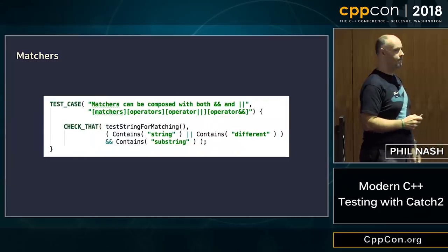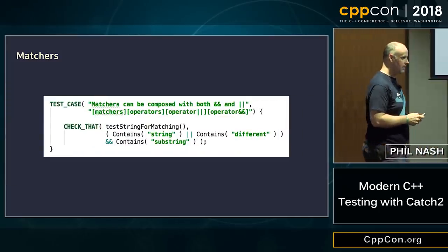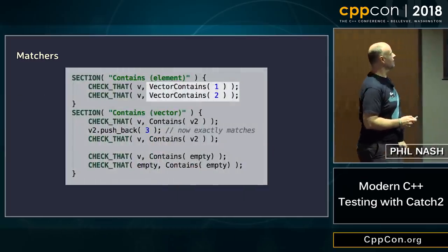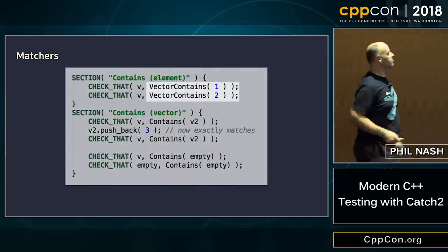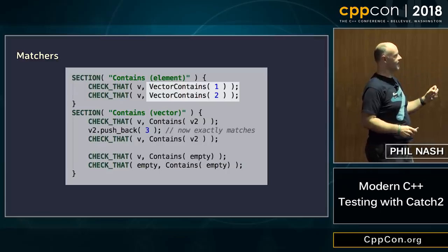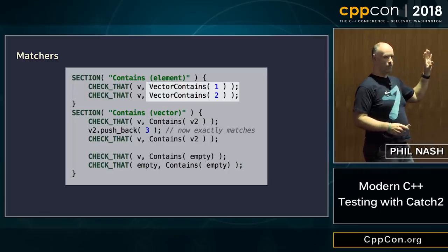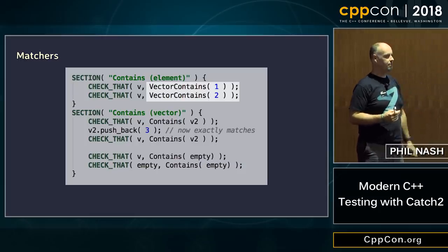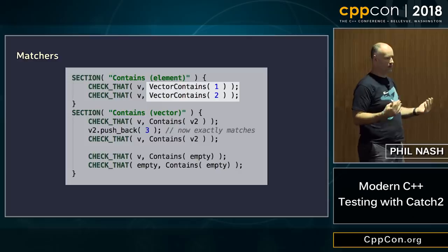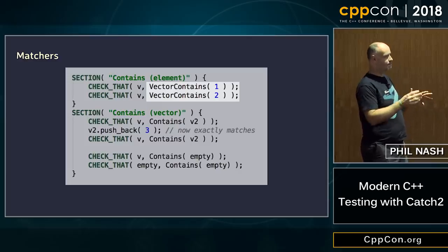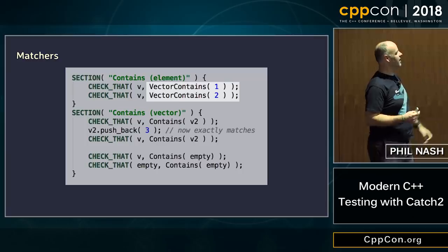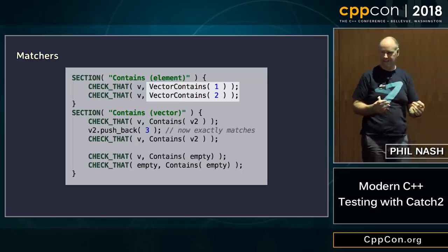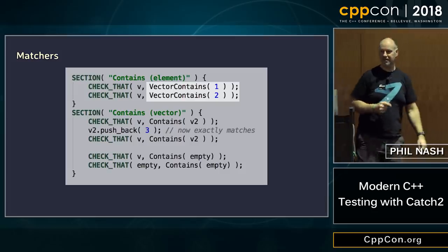A question came up: why do we have VectorContains and Contains as separate matchers? They mean different things, and I wanted to do this using overloading. I can't remember exactly what the problem was, but there was some ambiguity, so I had to disambiguate one of them. I was never quite happy with it, but I was more interested in giving it the functionality. If you've got any ideas for improving it, do let me know.